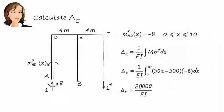Since we have already determined the bending moments due to the real loads, to calculate delta C we just need to write the bending moment equation for member AD due to a virtual unit load placed at C. We then integrate M times M star to get delta C.